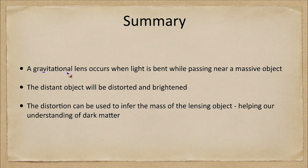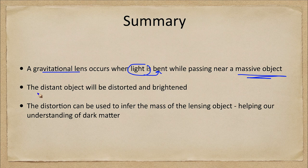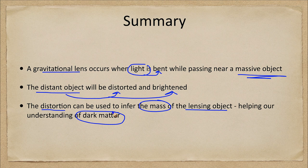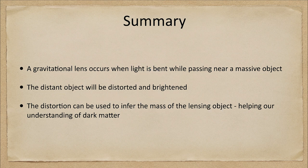So let's finish up with our summary. A gravitational lens occurs when light is bent as it passes near some object with mass — the greater the mass, the greater the bending. The light from a distant object will be distorted and brightened by the effects of this gravitational lens. The distortion can be used to infer the mass of the lensing object, whether it's a star, a galaxy, or a galaxy cluster. And this has greatly improved our understanding of the amount of dark matter that exists in the universe.